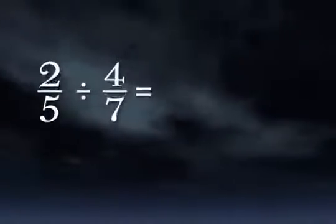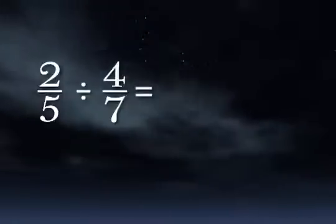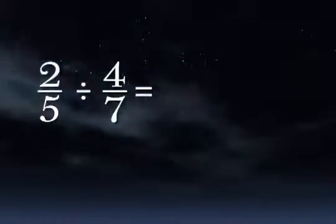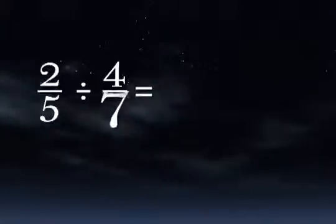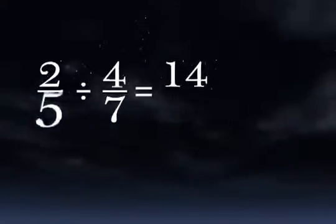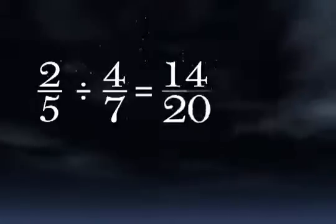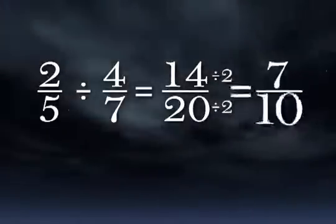When dividing fractions, you want cross-product divided by cross-product. So cross-multiply. 2 times 7 divided by 5 times 4. That's 14 over 20, which simplifies to 7 tenths.